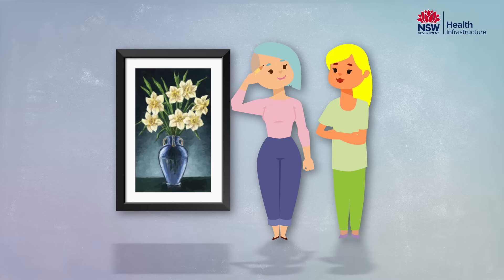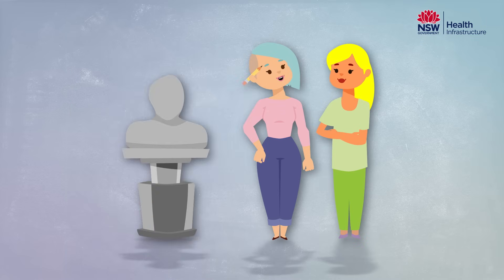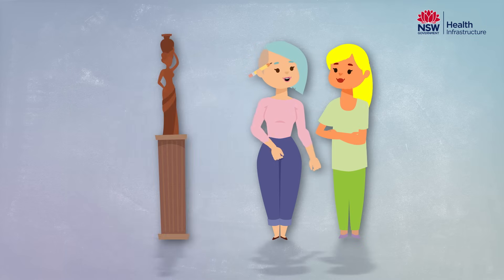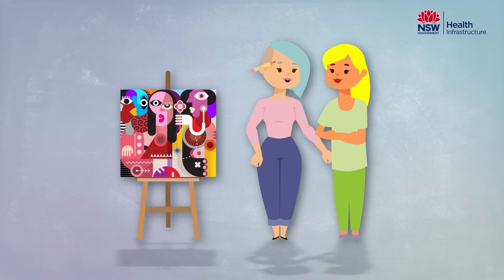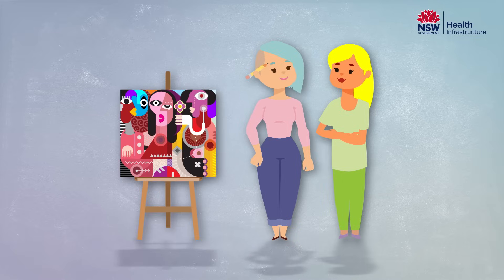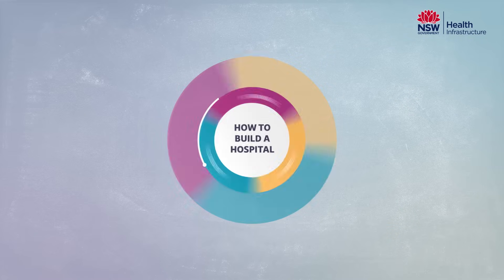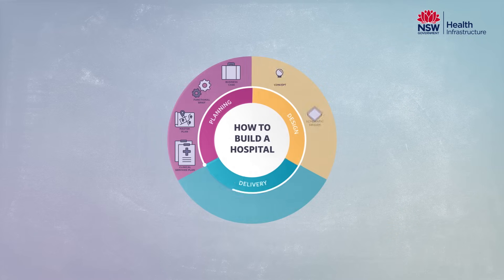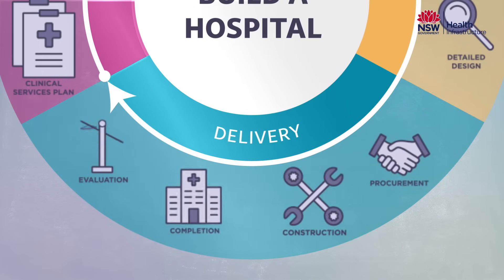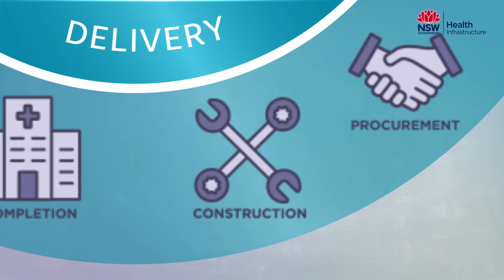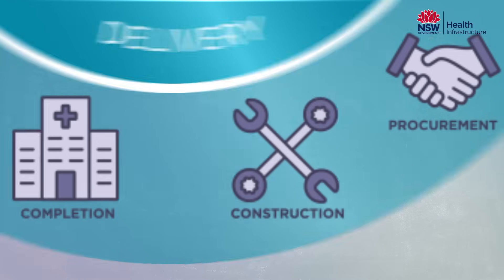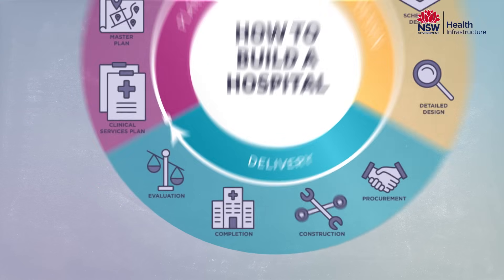At this time, we also develop an arts and cultural strategy to give the facility a local, bright and welcoming feel with artwork, installations and way-finding signage. Once our detailed design is finalised, we move into the delivery phase. This starts by issuing a tender to engage a construction company that can build a high-quality health service on time and to budget.